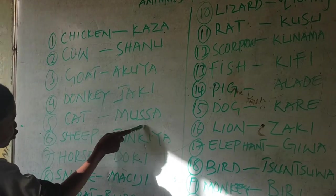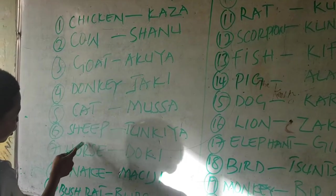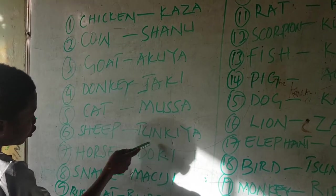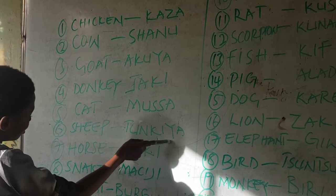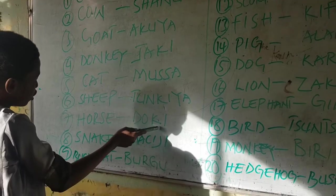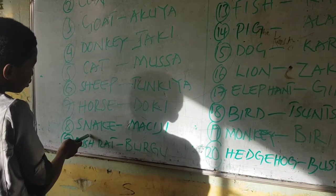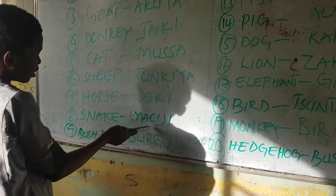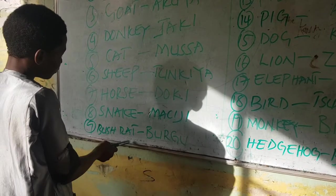Cat, musa. Sheep, tunkia. Horse, doki. Snake, machiji.